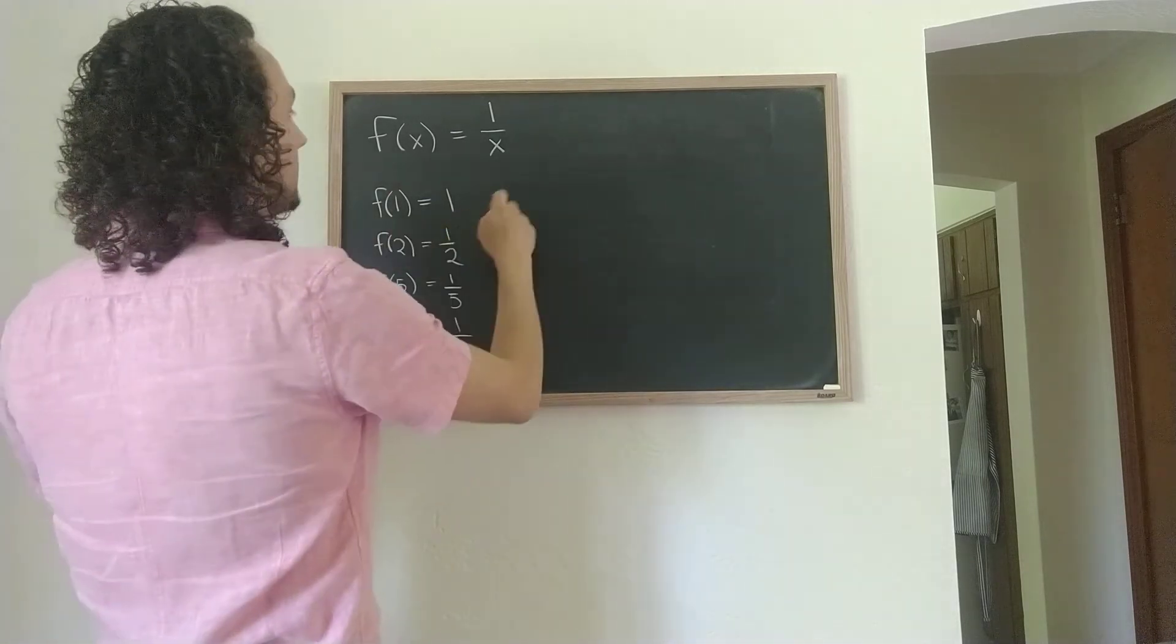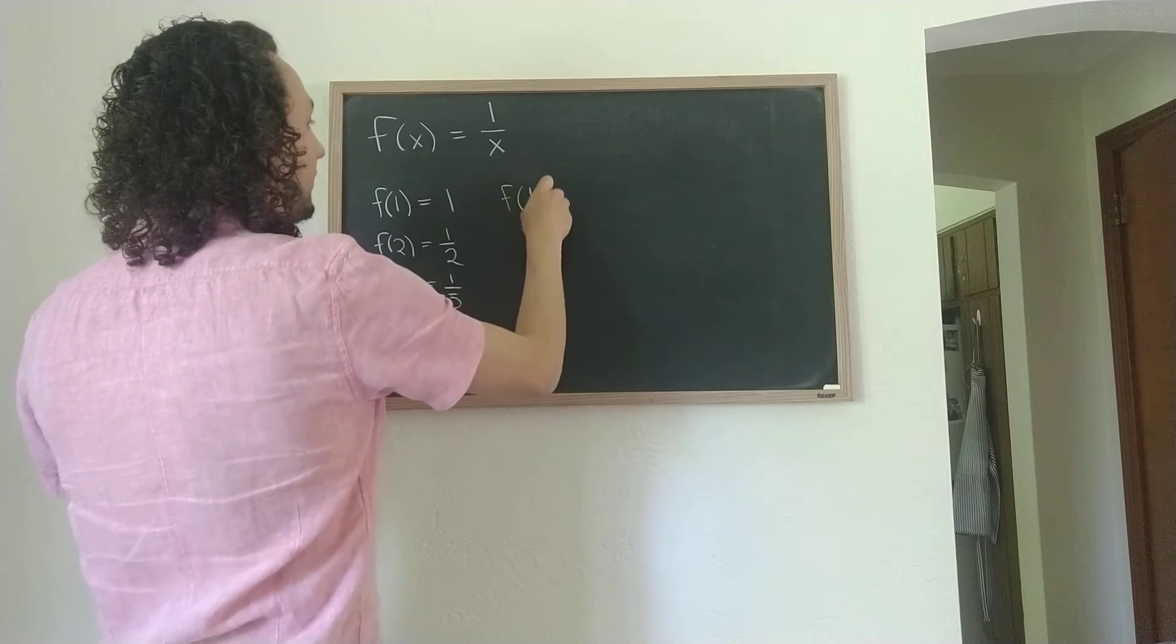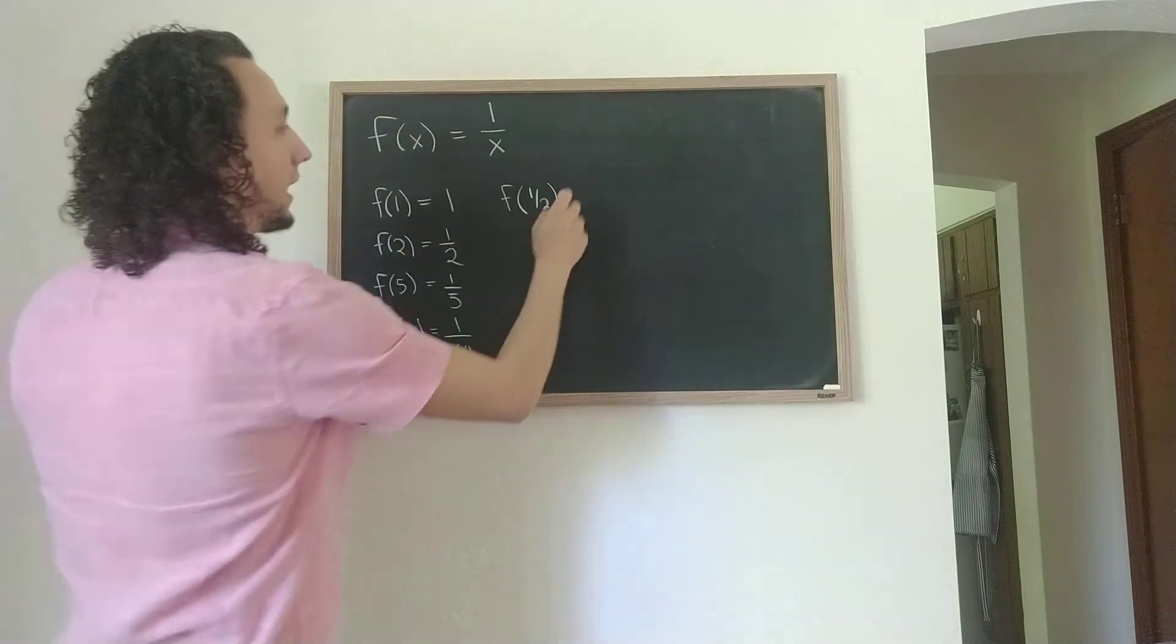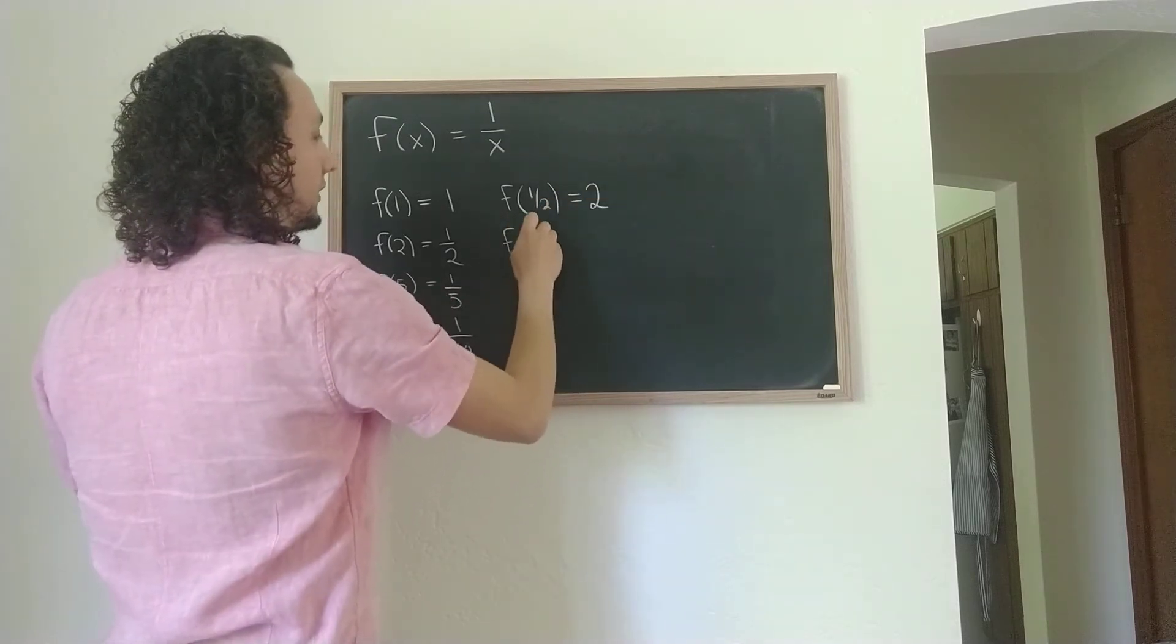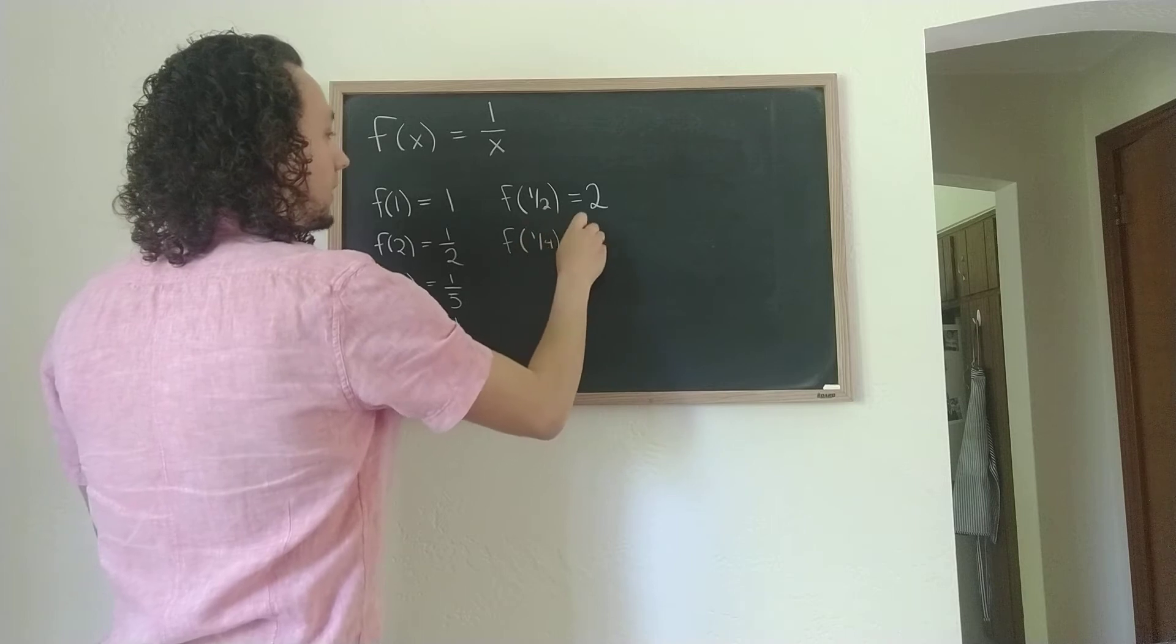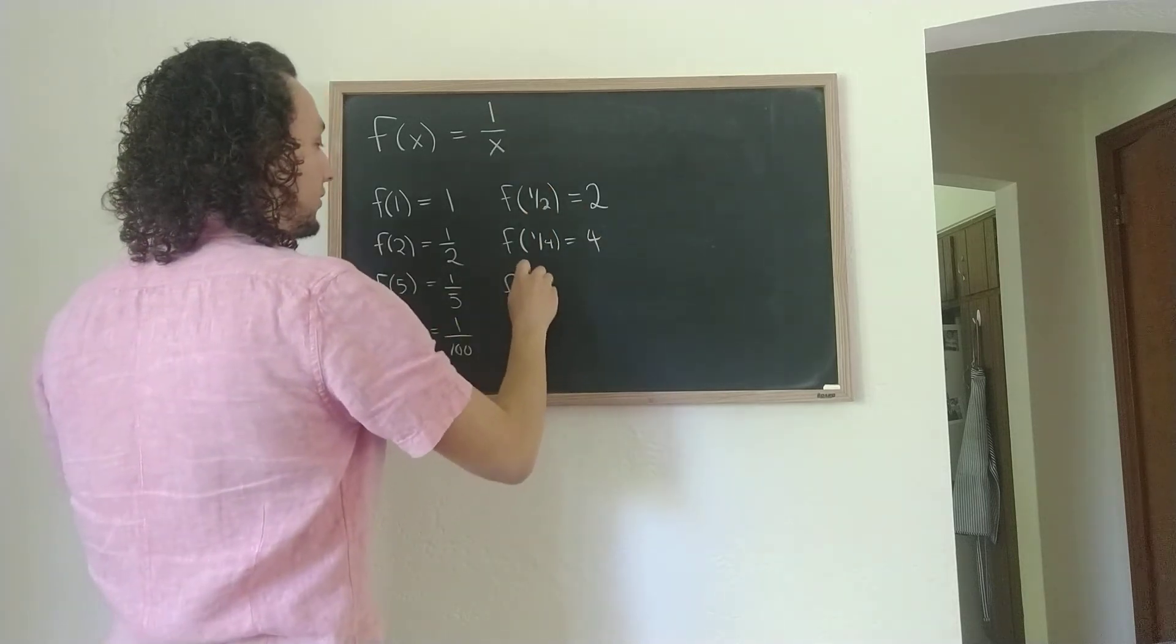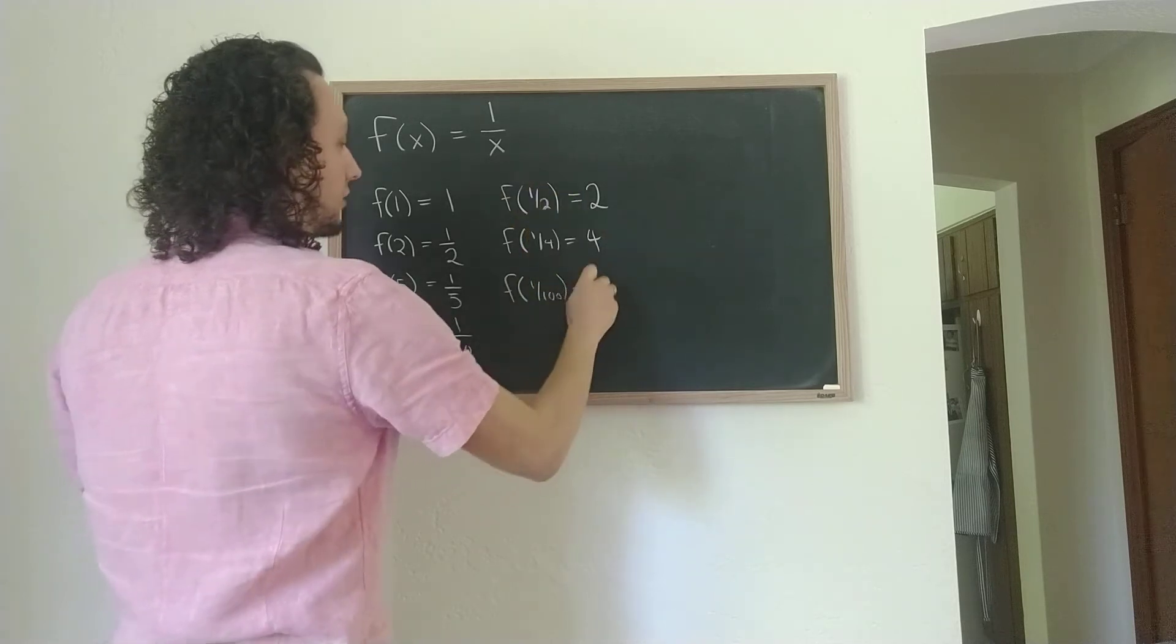And we can also see that f of 1 half, if I plug 1 half into the function, then I get 1 divided by 1 half, which is actually equal to 2. And f of 1 quarter is 1 divided by 1 quarter, which is 4, and so on. f of 1 over 100 is 1 divided by 1 over 100, which is 100.